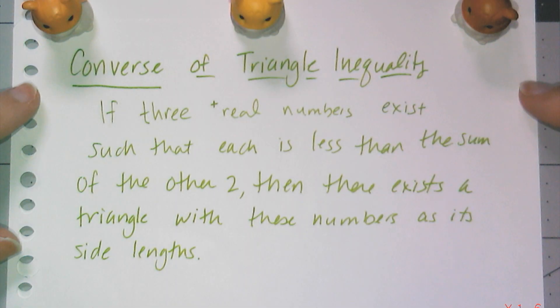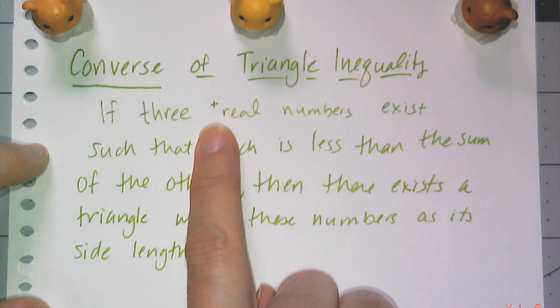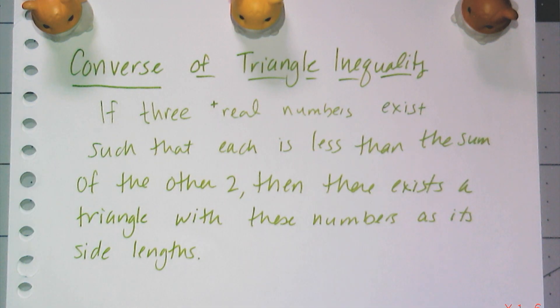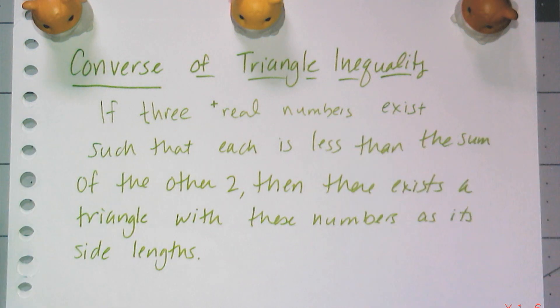So the converse of the triangle inequality says that if three real numbers exist such that each is less than the sum of the other two, then there exists a triangle with those numbers as its length. And you'll see I put a little plus sign with the real. That's because in geometry we don't really deal with negatives unless they're in a coordinate plane.